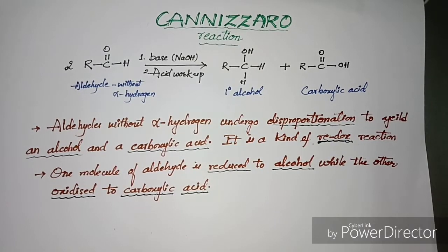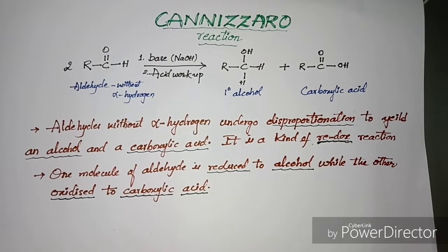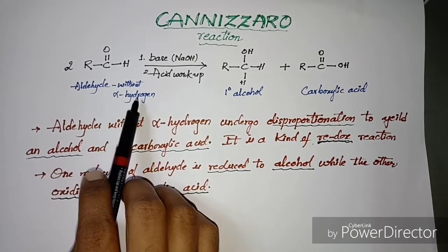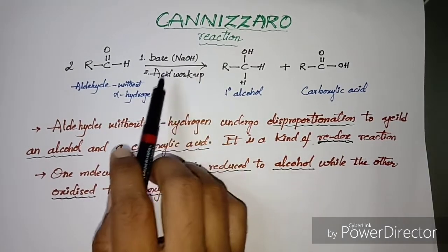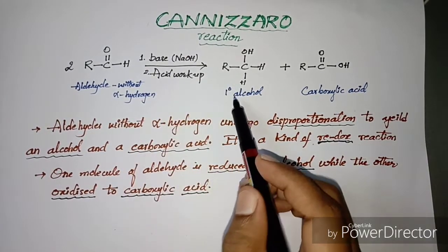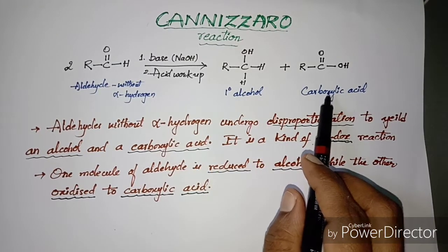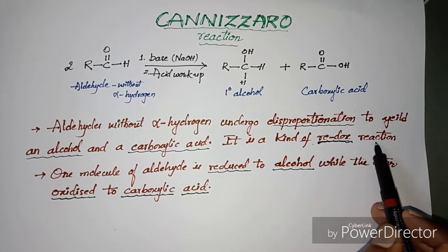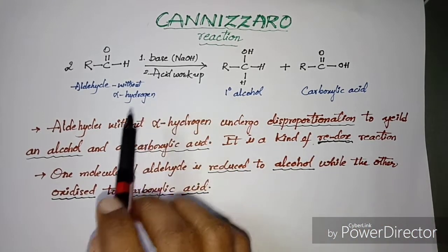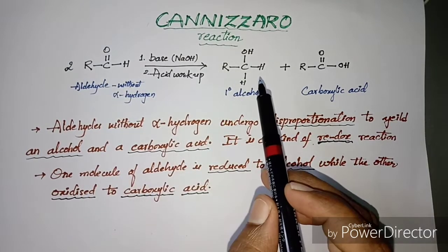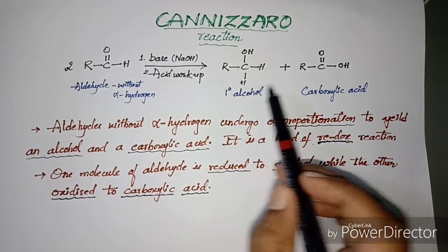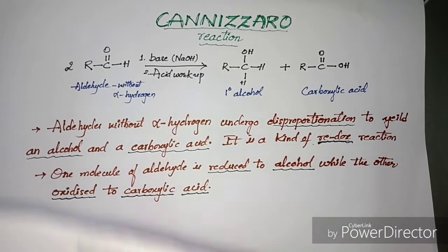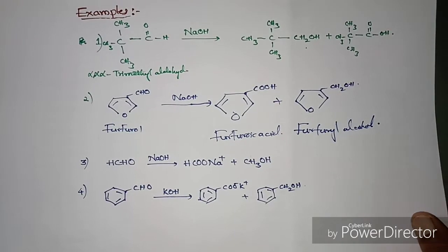In this video I'm going to discuss the Cannizzaro reaction. In a Cannizzaro reaction, two molecules of aldehyde without alpha hydrogen, in the presence of a strong base and with acid workup, give rise to one molecule of alcohol and another molecule of carboxylic acid. It is a kind of redox reaction — one molecule of aldehyde reduces to alcohol and another oxidizes to carboxylic acid.